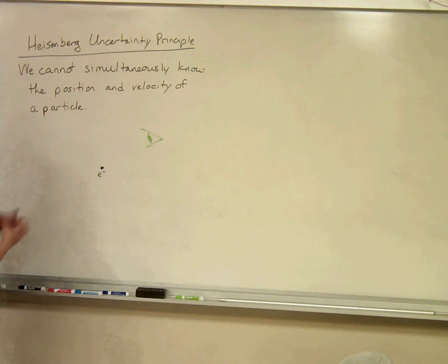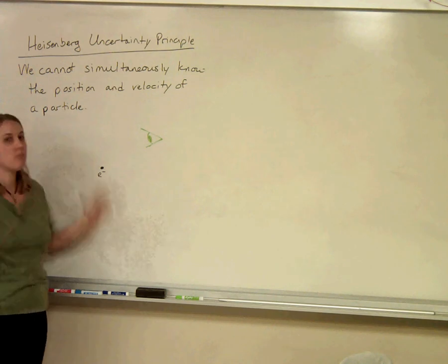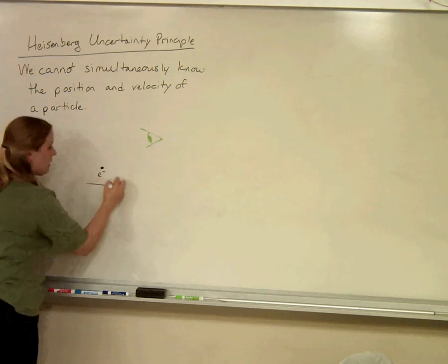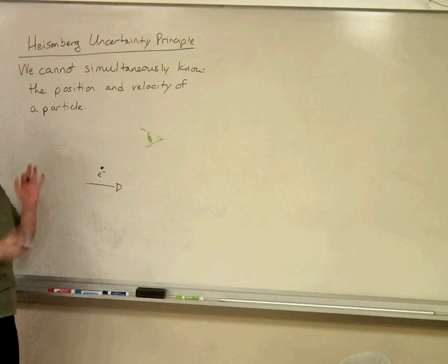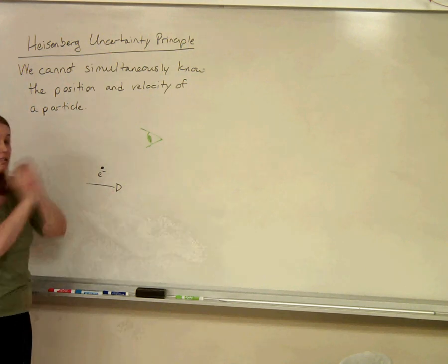The reason for this is electrons are always moving. So this electron is going in some direction, and velocity is the direction that you're traveling and the speed at which you're traveling.